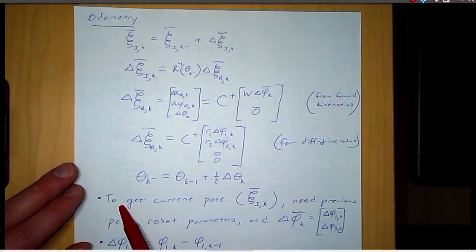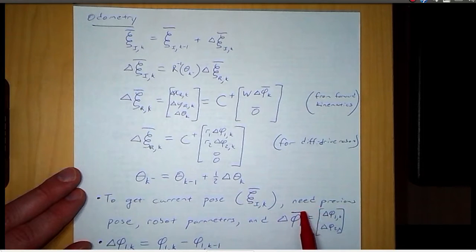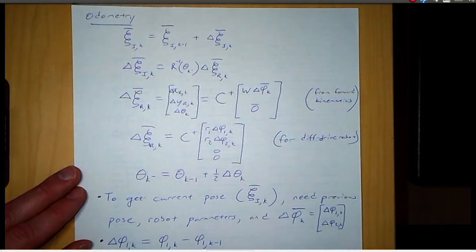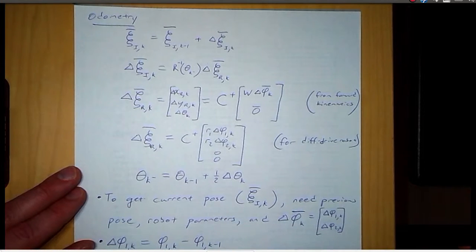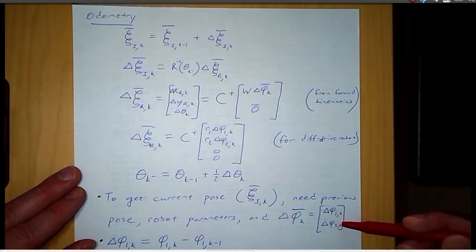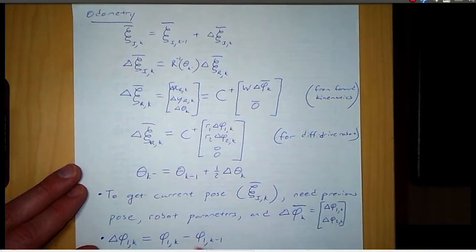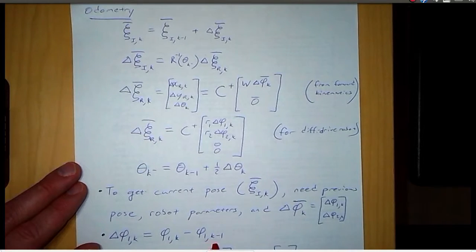To summarize for odometry: to get the current pose, psi i at time k, we need the previous pose, psi i at k minus 1, the robot parameters alpha, beta, L, R, and delta phi k. Delta phi k, the vector, is just made up of the wheel displacements at time k. The wheel displacements at time k are defined such that for wheel one, it's the difference between the wheel one angle at time k and the wheel one angle at time k minus 1.